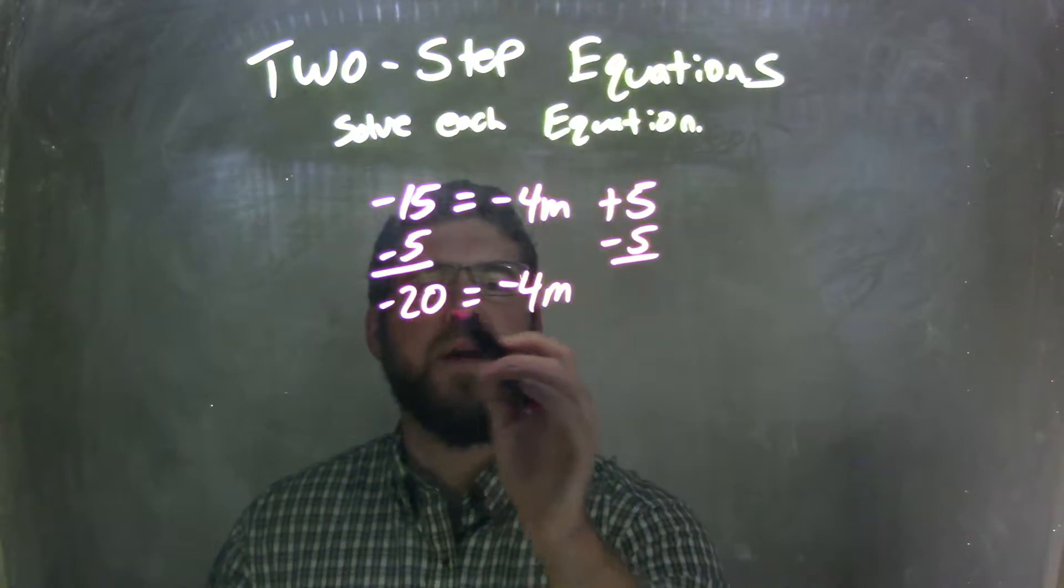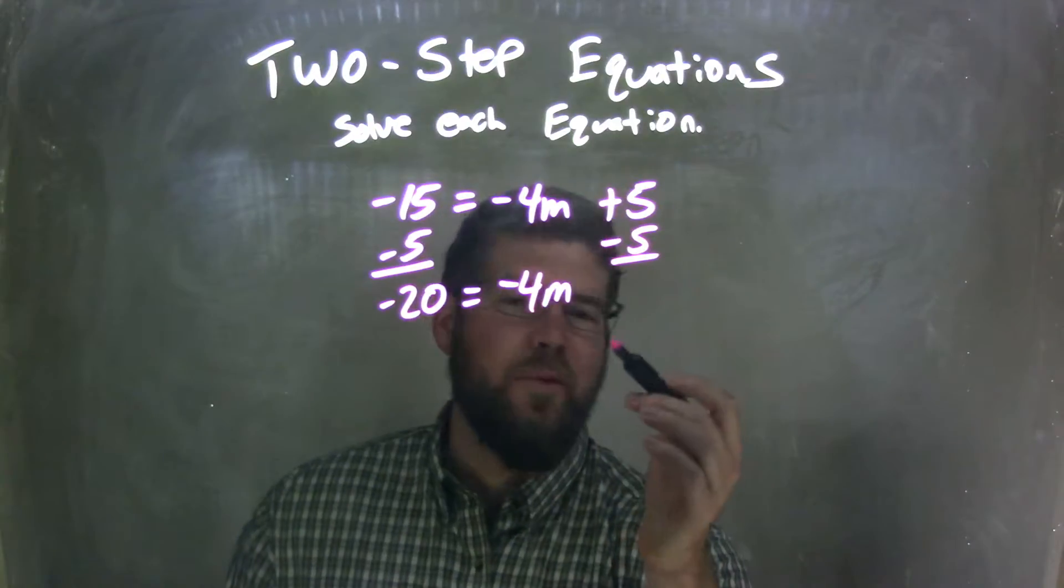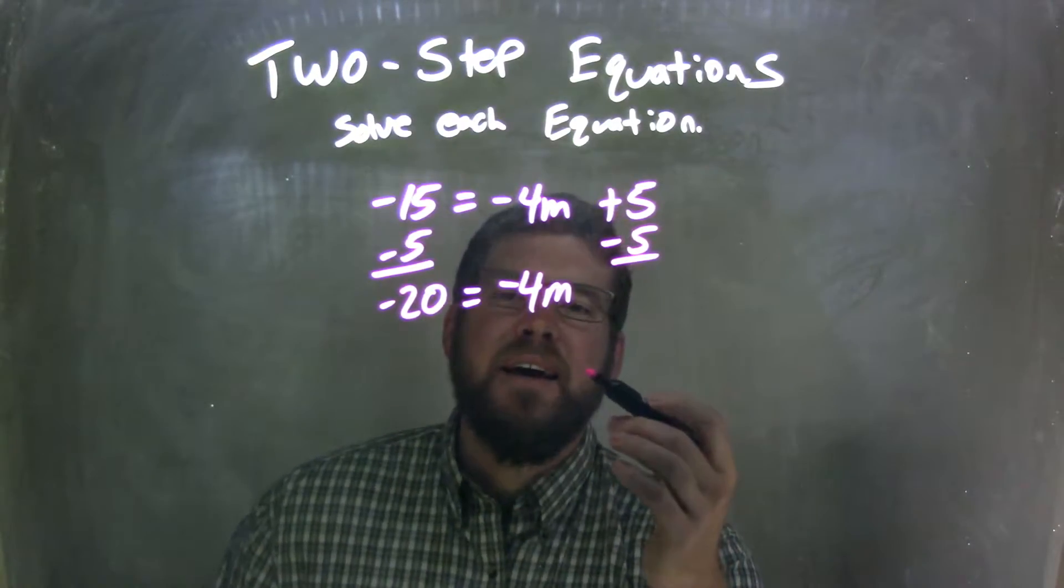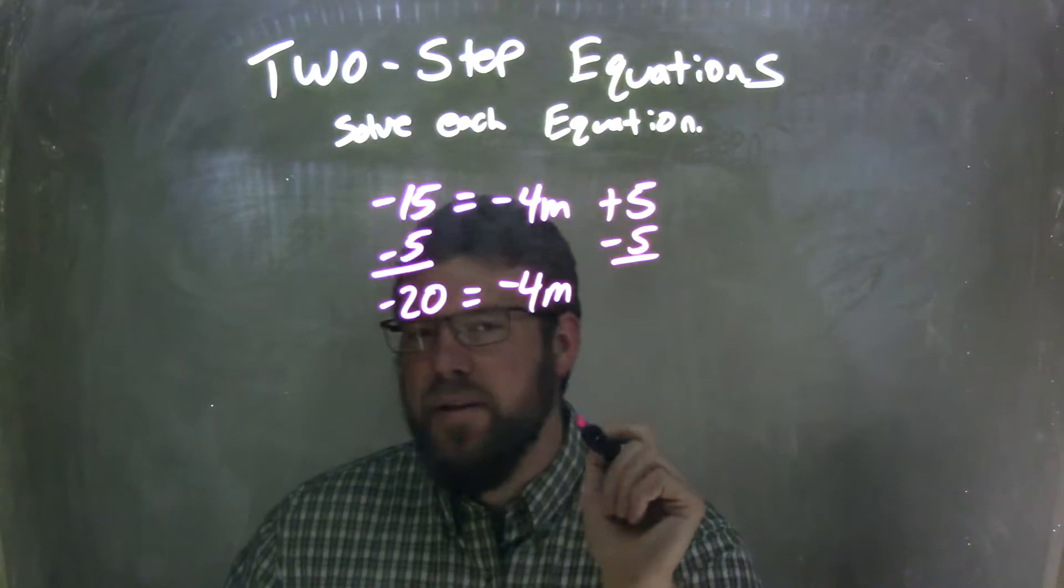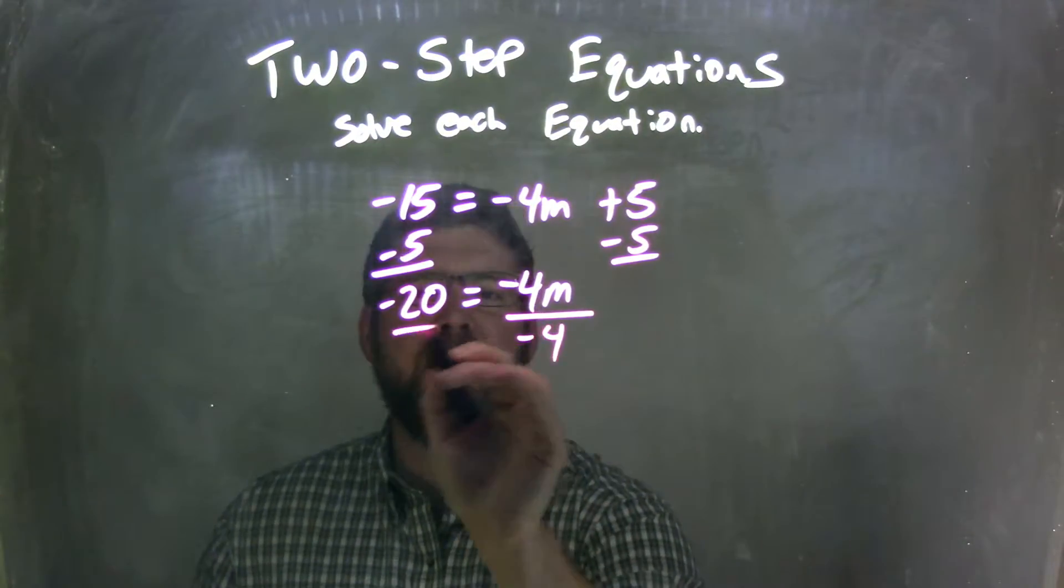So now we have negative 20 equals negative 4m. Well, there's multiplication between the negative 4 and the m. Opposite of multiplication is division. So I'm going to divide by negative 4 on both sides.